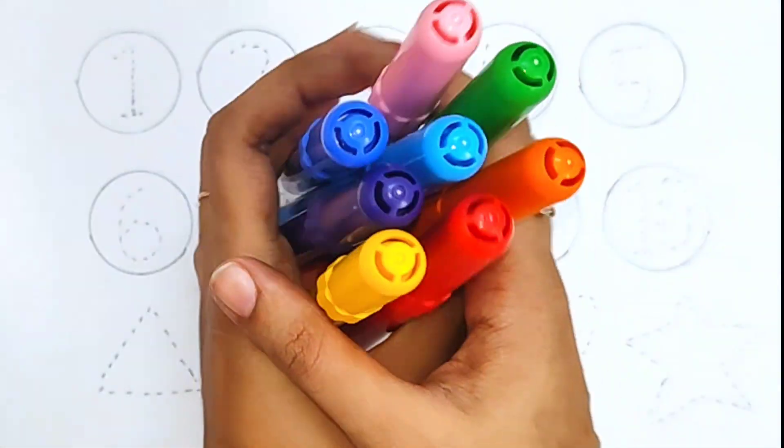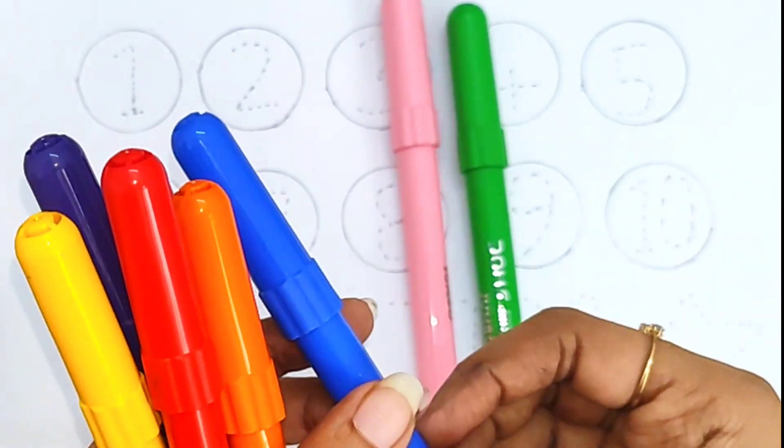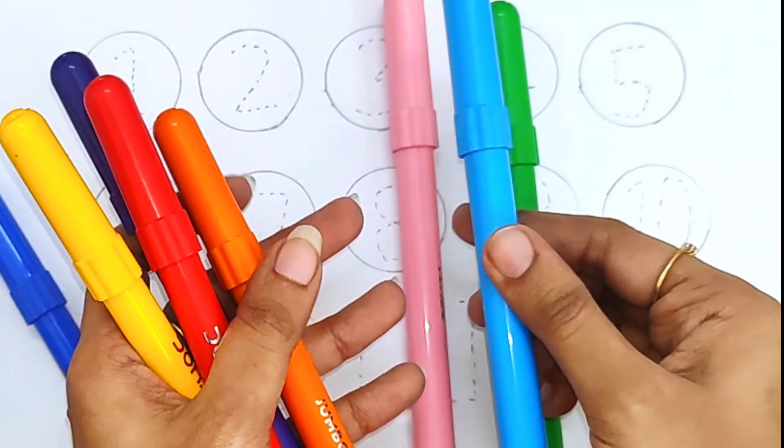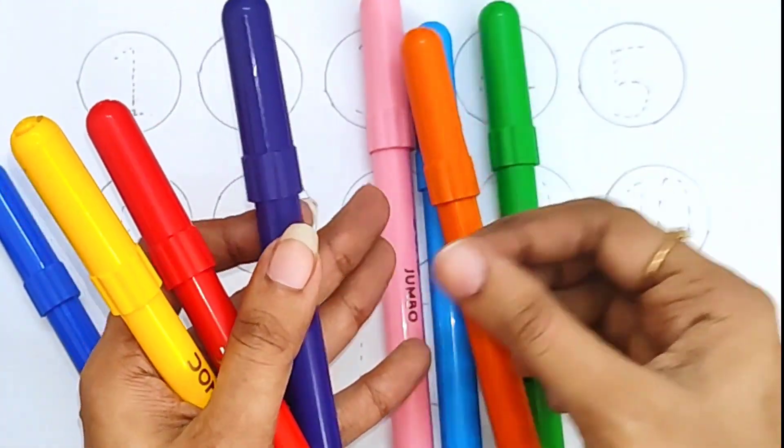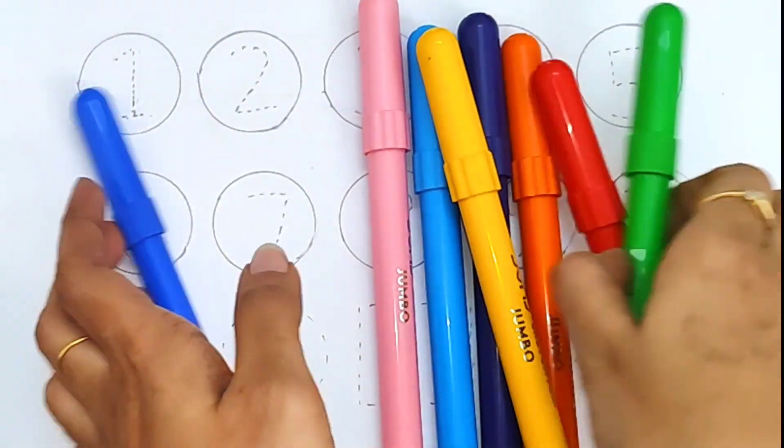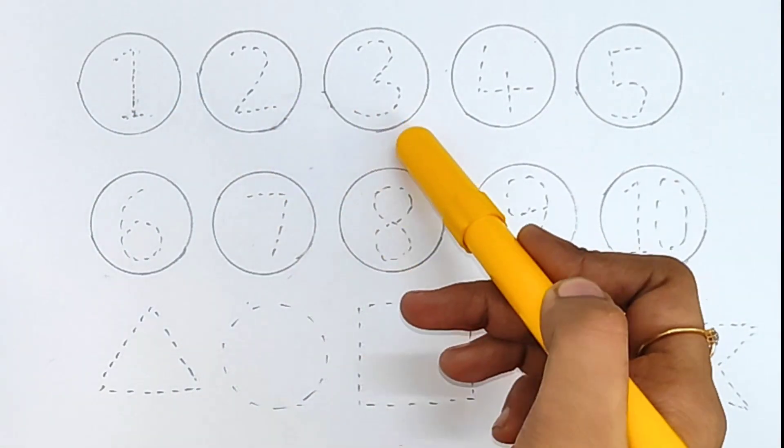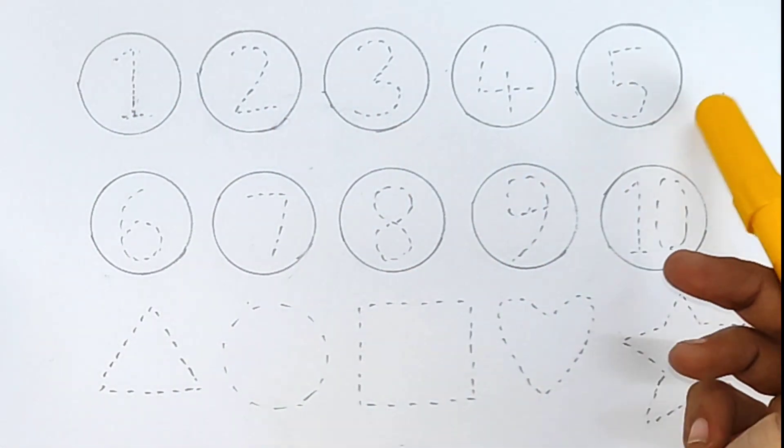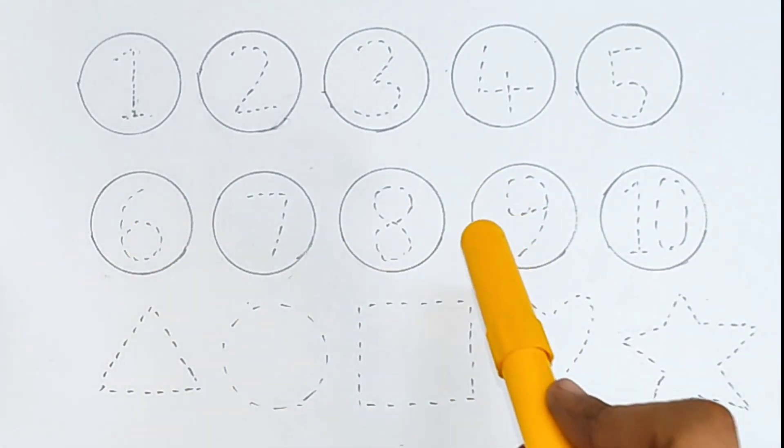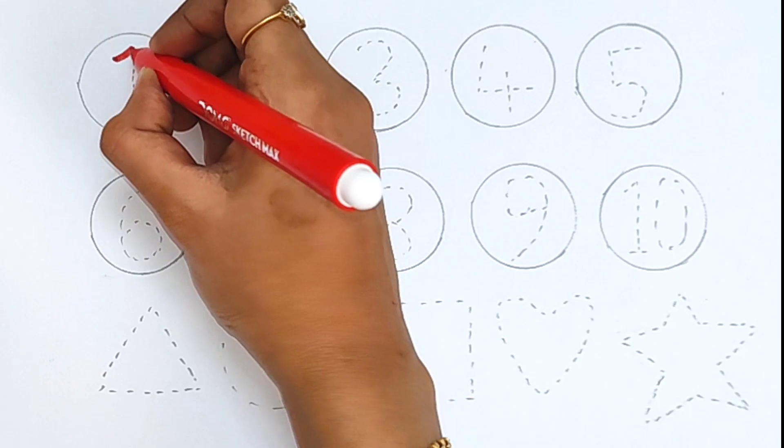Hello guys, let's learn some colors: pink color, green color, dark blue color, light blue color, orange color, violet color, red color, yellow color. Now let's learn 1, 2, 3: 1, 2, 3, 4, 5, 6, 7, 8, 9, 10. Triangle, circle, square, heart, star. One.